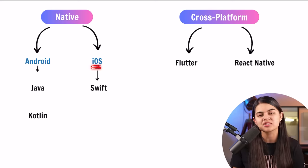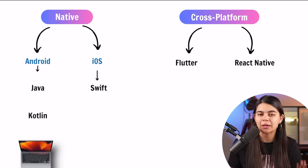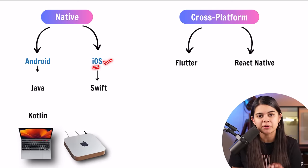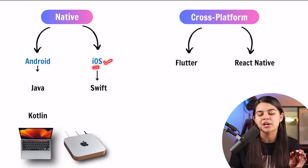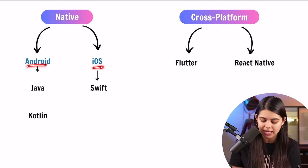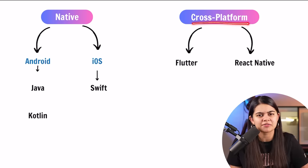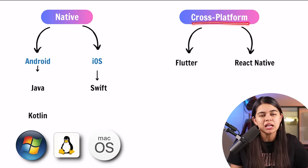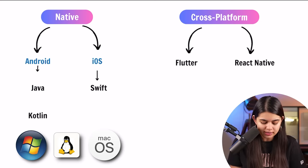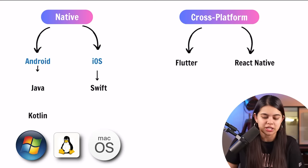For iOS, there is a constraint that you need an Apple device — a MacBook or Mac Mini — that is compulsory for iOS development. So in both native cases, we need a fairly strong system. In cross-platform, there is no OS constraint; whether you have Windows, Linux, or Mac, you can develop across all three. However, a stronger system is still needed for cross-platform development.